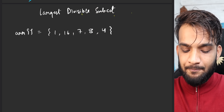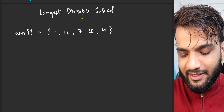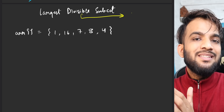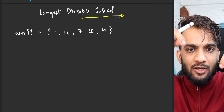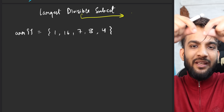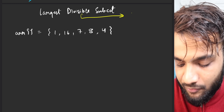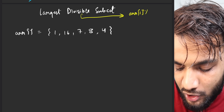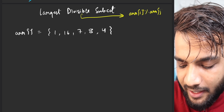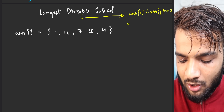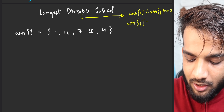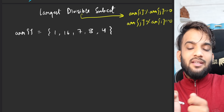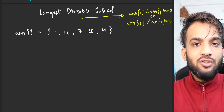Now what is the definition of 'divisible'? If you have picked up a subset, for all the elements in it, if you pick any two elements they should be dividing each other. So if I pick array[i] and array[j], either array[i] should divide array[j], or array[j] should divide array[i] — it should satisfy either of these conditions.